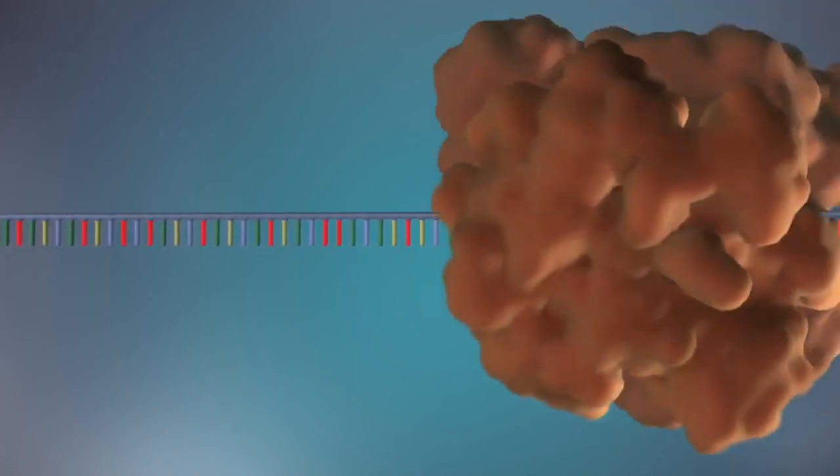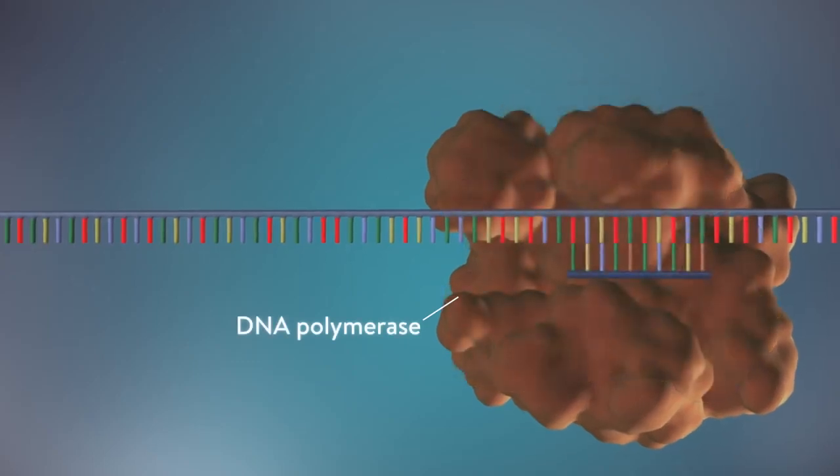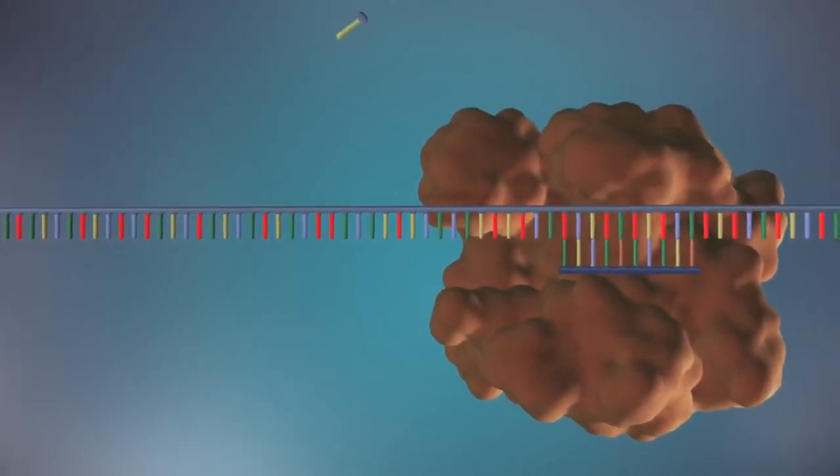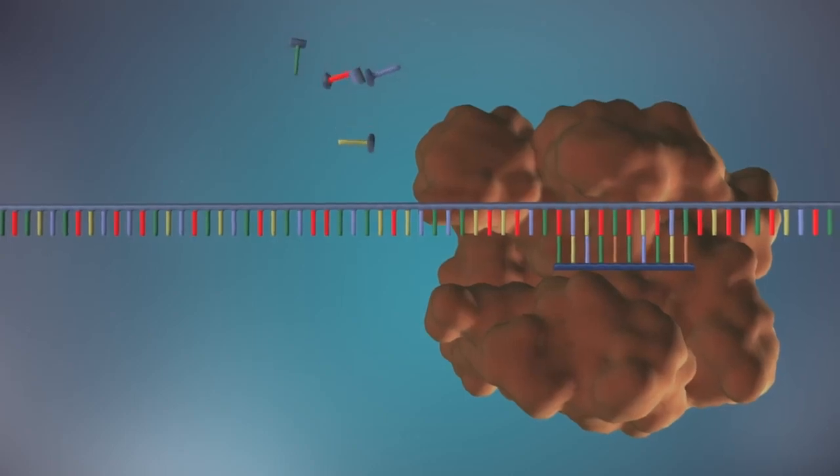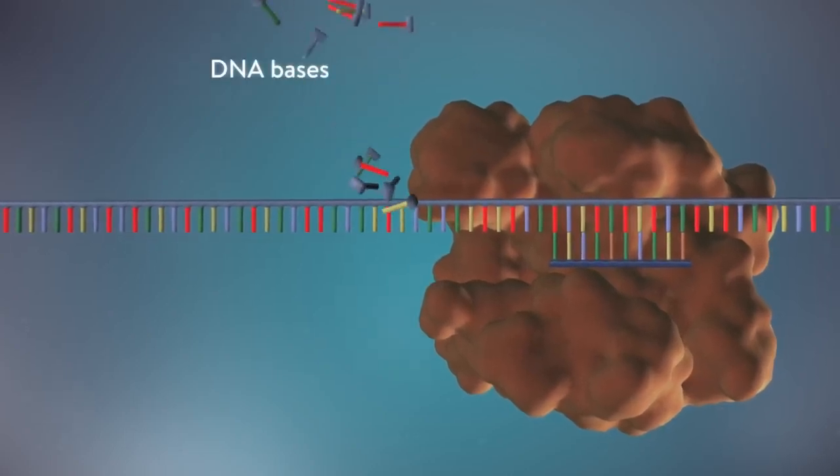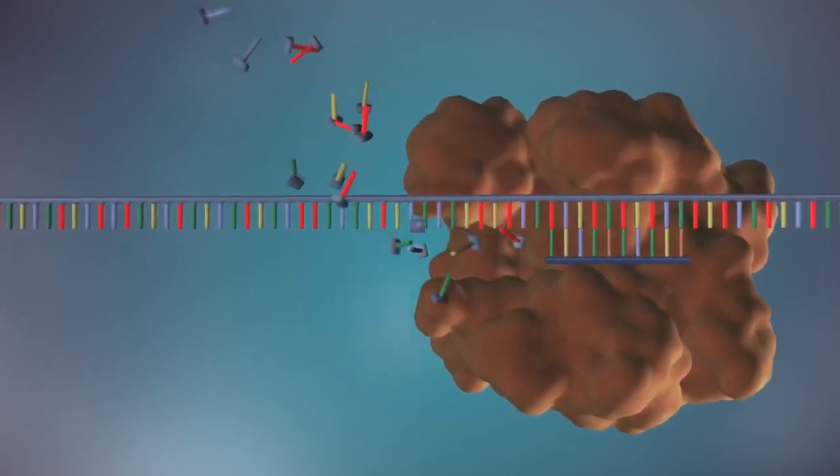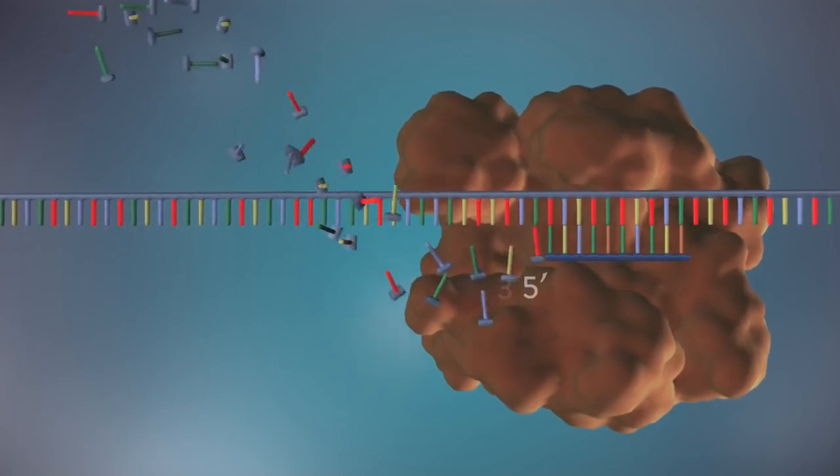An enzyme called DNA polymerase binds to the primer and will make the new strand of DNA. DNA polymerase can only add DNA bases in one direction, from the 5' end to the 3' end.